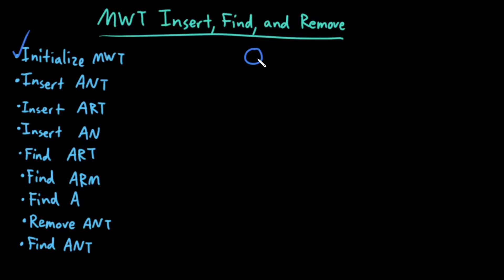The insertion algorithm is very trivial. Start at the root, and for each letter in the word that I'm inserting, check if my current node has a child edge labeled by that letter. If it does not, I need to create a new child edge labeled by that letter. Then I can traverse down to that next child edge and continue. The moment I finish my word, whatever my current node is, I have to mark it as a word node. Let's just try out an example — it's actually very simple.